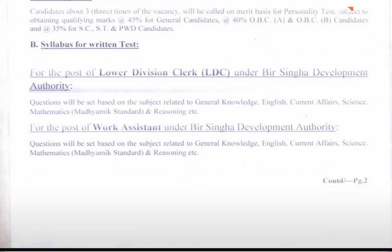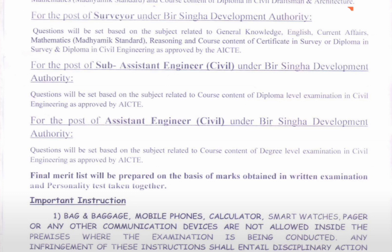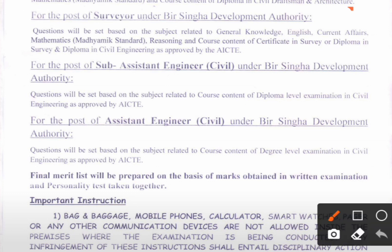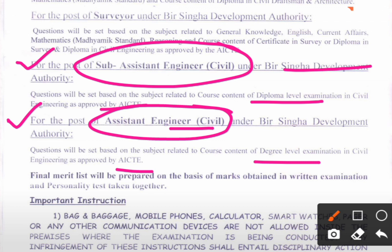The posts include LDC, Work Assistant, Draftsman, and Surveyor. For Sub-Assistant Engineer, the syllabus is Diploma level as per AICTE — that means diploma-level civil engineering syllabus. For Assistant Engineer, the syllabus is degree-level civil engineering as per AICTE approval. So diploma-level syllabus is for the post of Sub-Assistant Engineer, and degree-level civil engineering syllabus is for the post of Assistant Engineer Civil.